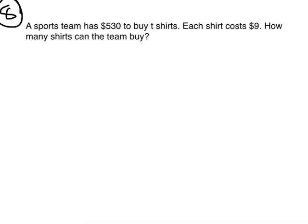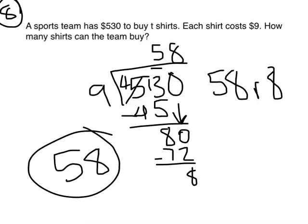Let's try another. A sports team has $530 to buy t-shirts. Each shirt costs $9. How many shirts can the team buy? Go ahead and answer that question now. The answer is 58. The team can buy 58 shirts. When I divide $530 into groups of $9, I have 58 groups of $9 with $8 left over. That means I can buy 58 shirts. The 8 leftover dollars are not enough to buy another shirt.